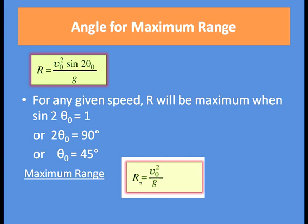So sin 2θ₀ = 1 means 2θ₀ = 90°, giving θ₀ = 45°. Putting θ₀ = 45°, the maximum range Rm = V0² / g.